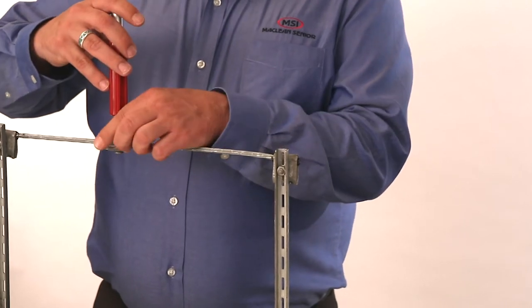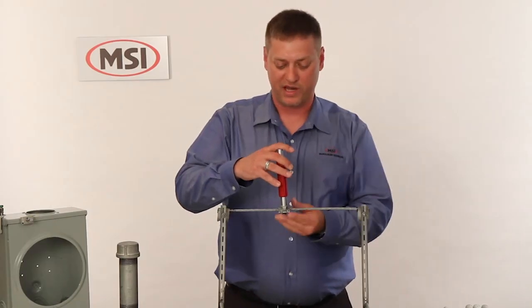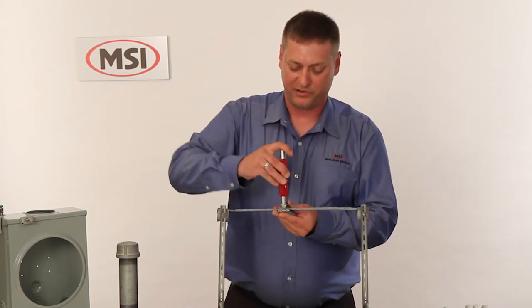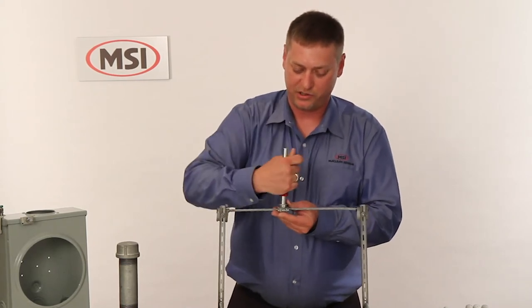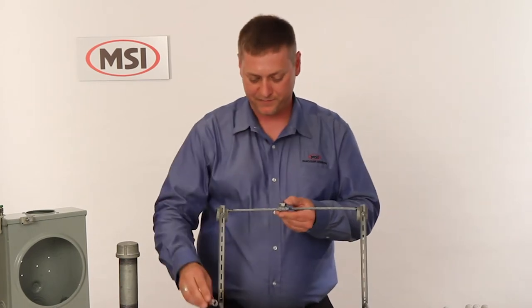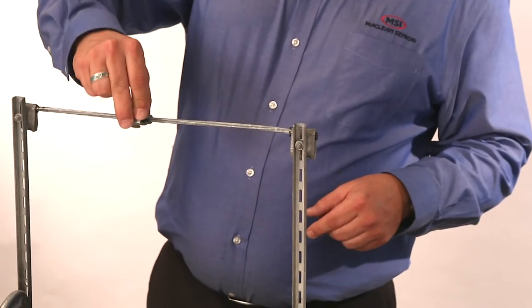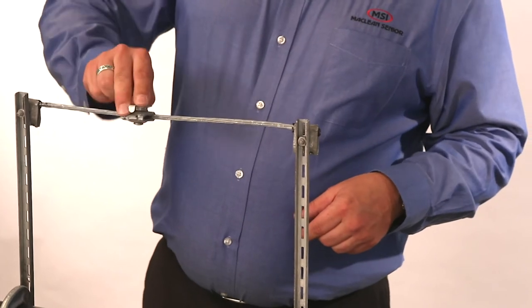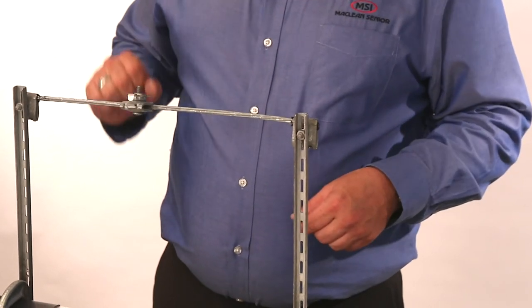Once you have it in position with the tab facing away from the cable direction, tighten it down using your 7/16ths can wrench, locking it onto the strand. It's nice and tight and will not move over time due to oxidation.